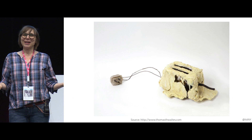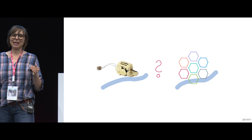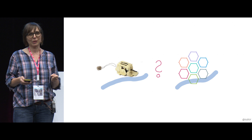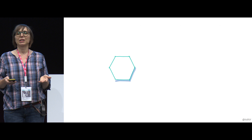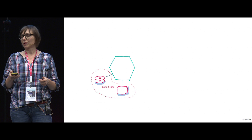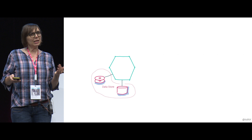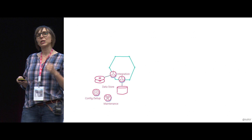Why am I telling you this story about the toaster project? Because in some way it reminded me of all the challenges and struggles that come when introducing microservices. When you start your journey to microservices, you first identify good candidates for microservices, modeled around your business capabilities, your bounded context where a domain model lives. Each microservice shall own the state of the domain model, so they need to address data storage components. These data storage components need to be integrated into your service — you need to configure, set up, and maintain them.